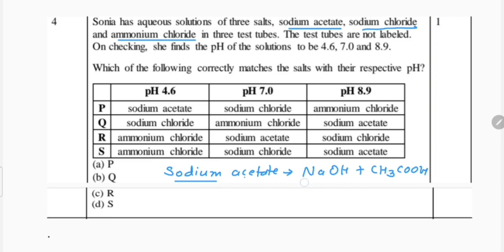Sodium hydroxide is a strong base and acetic acid is a weak acid. What will be the nature of the salt? Because base is strong, it is basic in nature, so it has pH 8.9.